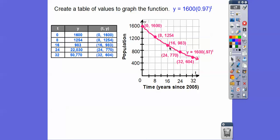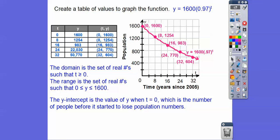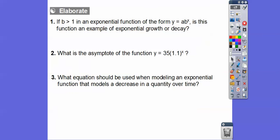So the domain: it starts at t equals 0, so t is greater than or equal to 0. The range: the high point is 1,600, and it approaches but never reaches 0, so 0 is less than or equal to y, less than or equal to 1,600. The y-intercept is the value of y when t equals 0, which is the number of people before the population started declining — 1,600.